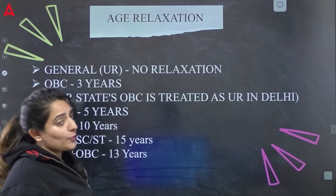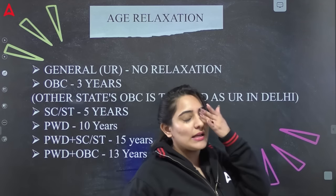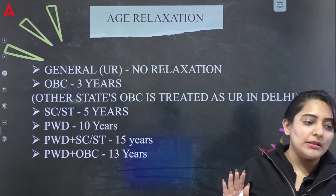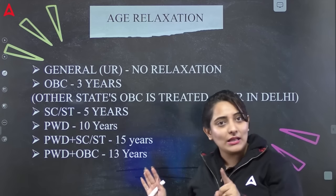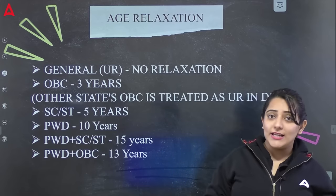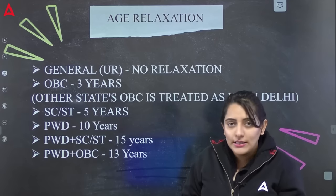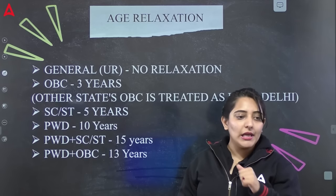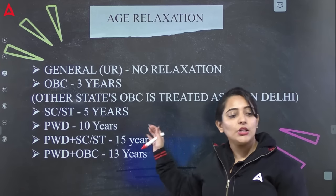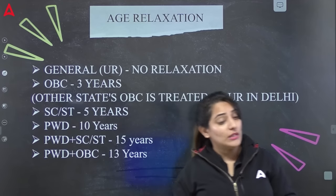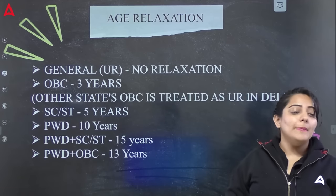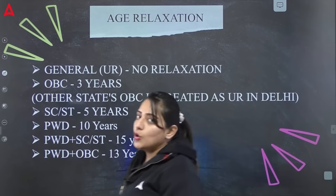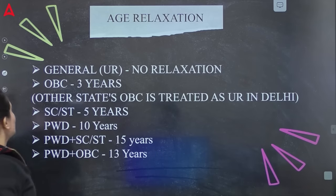Negative marking सभी posts पर मिलेगी। Age relaxation की बात करें तो General category को कोई relaxation नहीं मिलती। OBC को 3 साल तक मिलती है, लेकिन अगर आपका domicile Delhi का नहीं है तो आप General में count होगे। SC/ST को 5 साल का relaxation, PWD को 10 साल का, PWD+SC/ST को 15 साल का, और PWD+OBC को 13 साल तक का relaxation मिलता है।